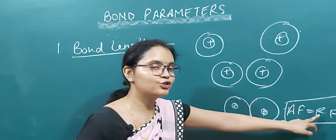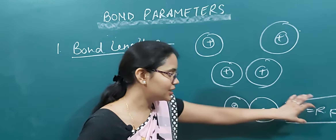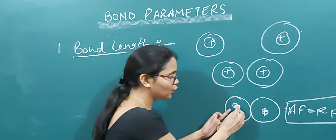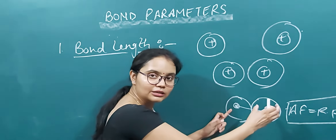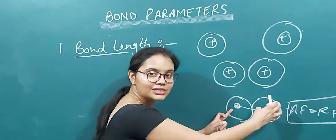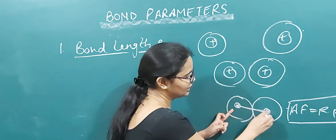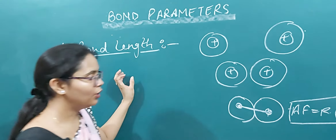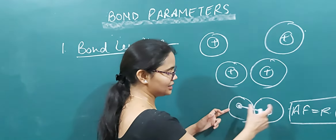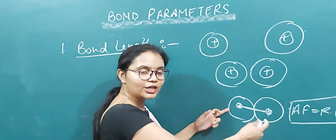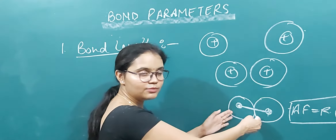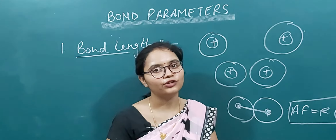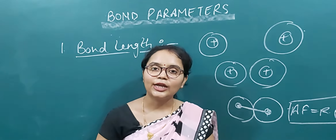At the condition where attraction force equals repulsion force, the distance from the center of the nucleus of the first atom to the center of the nucleus of the second atom is known as bond length. Bond length is the distance between the centers of the nuclei of two bonded atoms when attraction force equals repulsion force.